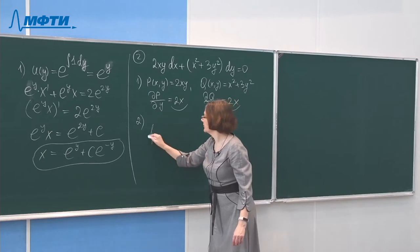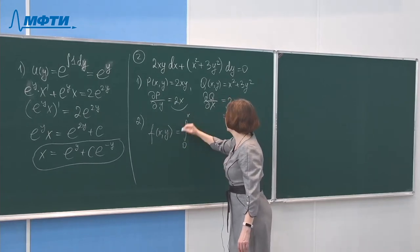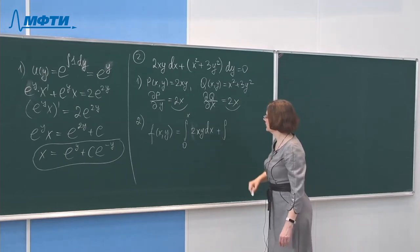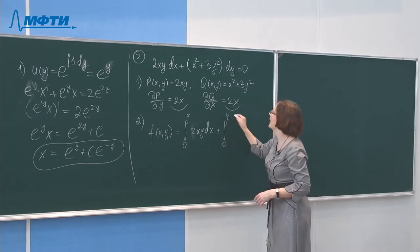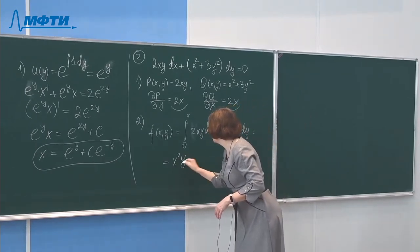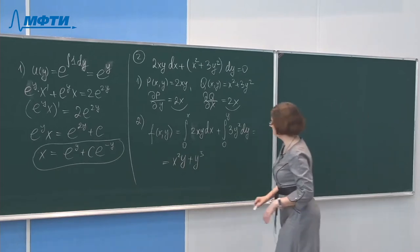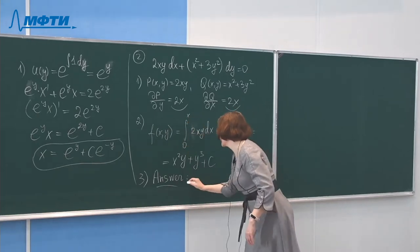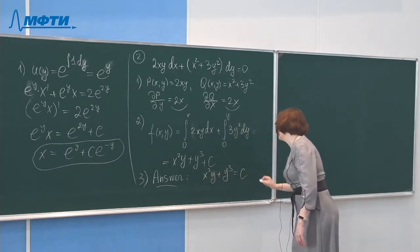We find the potential function by integrating: integrating from 0 to x, then integrating with respect to y substituting x=0, giving ∫3y² dy. This yields x²y plus y³. So the solution is written as x²y plus y³ equals C.